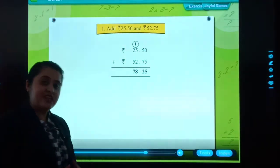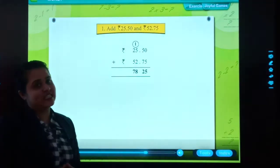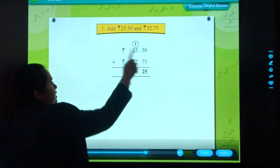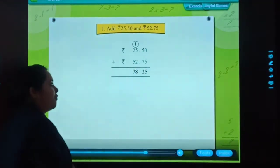We will properly arrange it. Always remember, decimals below decimals. As we do addition, we will do the same way. 0 plus 5 equals 5, 5 plus 7 equals 12. One will be carry forwarded.